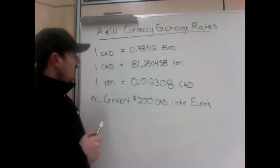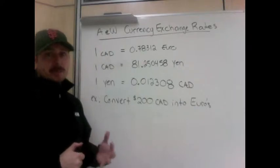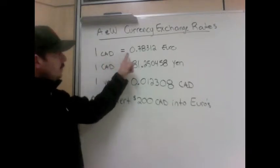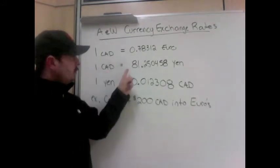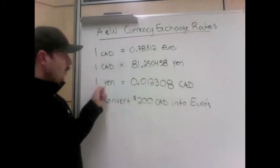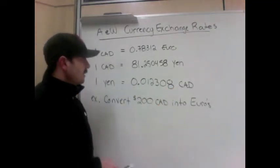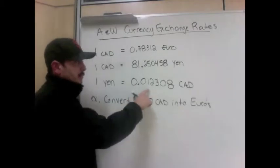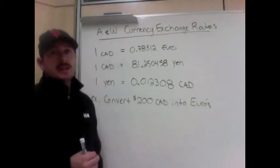Banks have exchange rates for money. If you take a certain amount of money in, they will convert it based on how much one unit is worth. For example, one Canadian dollar equals 0.78312 euros if you're traveling to Europe. One Canadian dollar equals 81.250485 yen — a yen is actually closer to a penny than a dollar. Or one yen is 0.012308 Canadian dollars. Typically we'd use US dollars to compare, but today they're almost exactly equal — about 1.000 — so I'm not using that as an example.